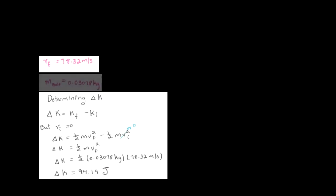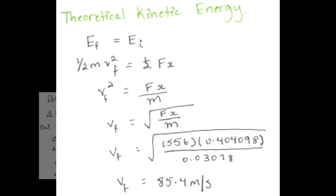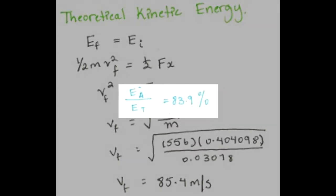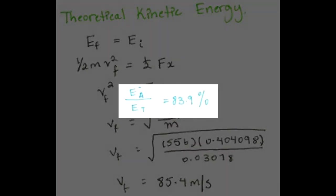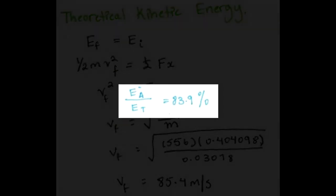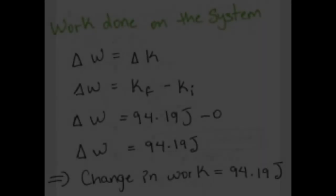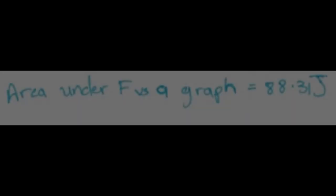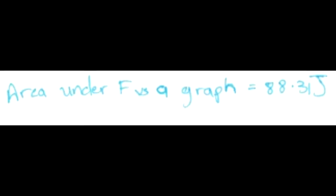The ideal kinetic energy would be 112.33 joules with a final velocity of 85.4 meters per second. The efficiency of the bow's ability to completely convert potential to kinetic energy in the video was 83.9%. Work is equivalent to the total kinetic energy, which was equal to 94.19 joules. According to the area under the graph multiplied by the mass of the bolt, the work done on the system was 88.31 joules, a 5.88 joule difference.